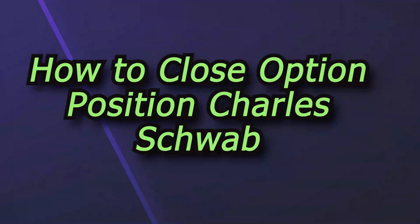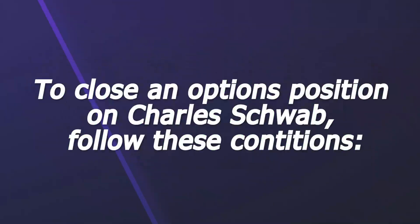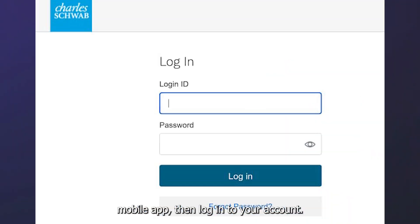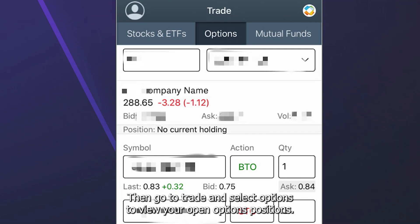How to close an options position on Charles Schwab. To close an options position on Charles Schwab, follow these steps: go to the Charles Schwab website or open the Schwab mobile app, then log into your account. Go to Trade and select Options to view your open options positions.